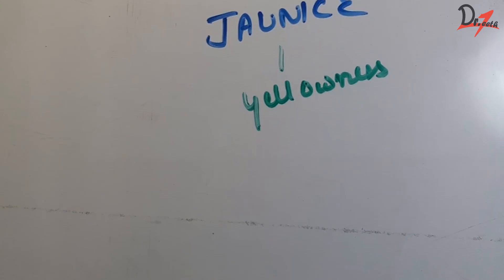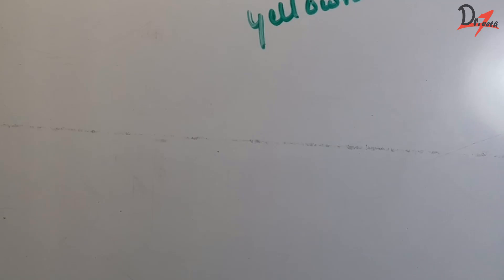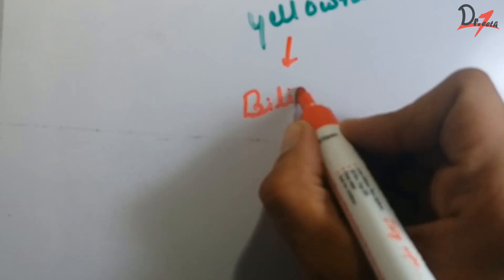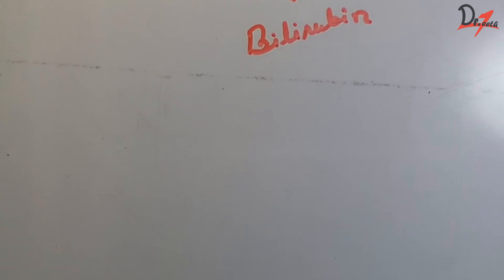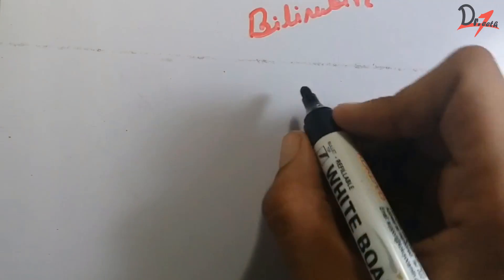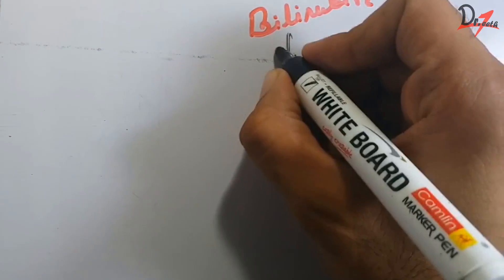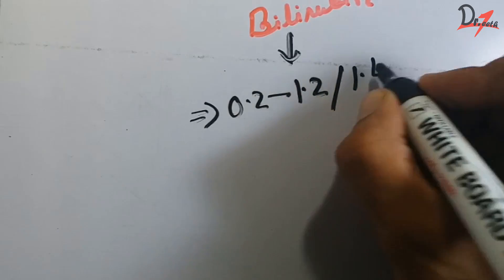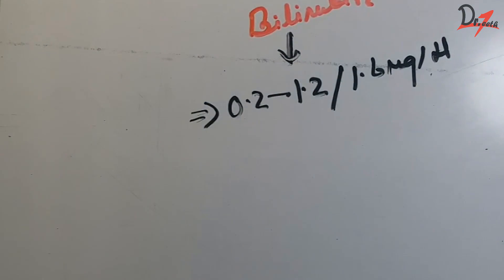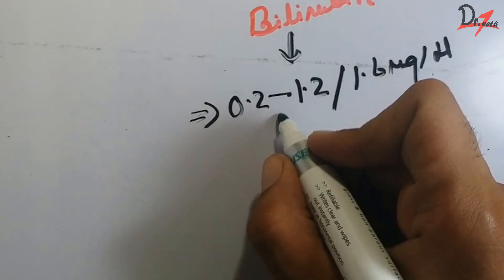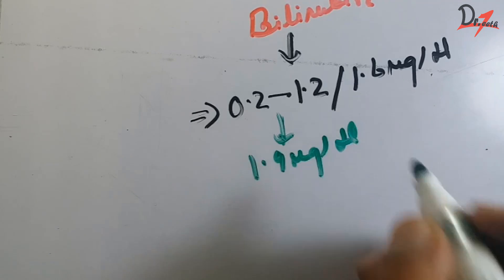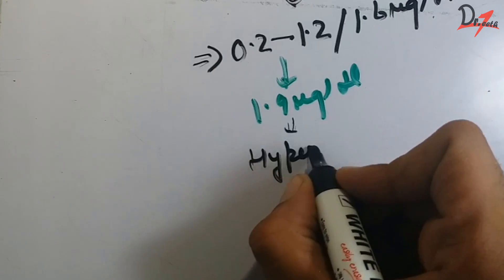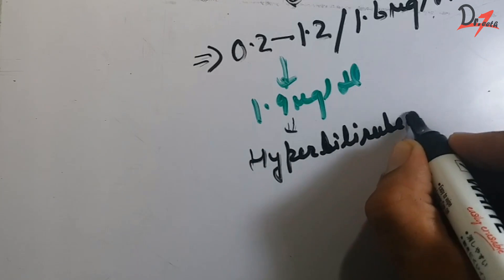The reason behind the yellowness of the body is a component known as bilirubin. It is really important to know how bilirubin is produced in the body. Before starting with the physiology, the normal range of bilirubin is between 0.2 and 1.2 to 1.6 mg per dL. A slight increase to 1.9 mg per deciliter is a condition called hyperbilirubinemia.